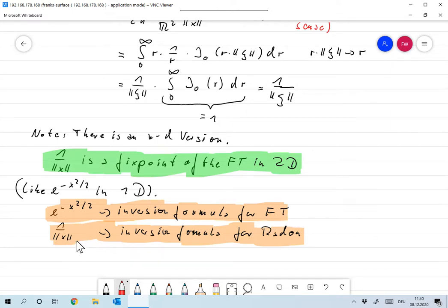And now the fact that 1 over norm x is a fixed point of the Fourier transform in 2D gives us a simple geometric way of inverting the Fourier transform of the radon transform. So this is a nice thing to note here. And so let's now really move to the radon transform.